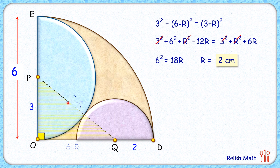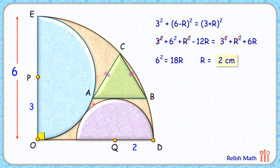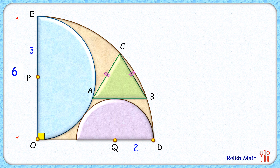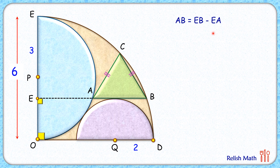Now let's remove the construction and bring our original triangle back. For the second part, we'll find the length of AB. To find the base length AB, let's extend BA to meet the quadrant at point E. Since AB is parallel to the base of the quadrant, this angle E will be 90 degrees. The length AB is EB minus EA, so we'll find both EB and EA individually.